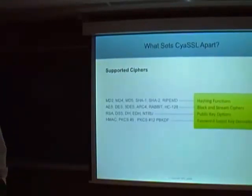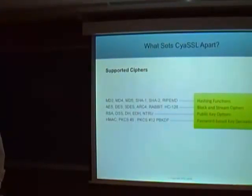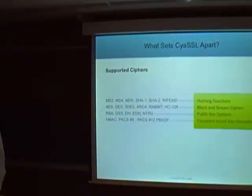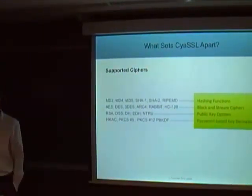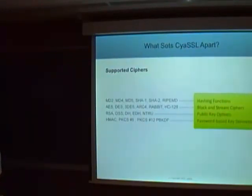This is a list of ciphers that CYASL supports — pretty much all standard ciphers, including some stream ciphers: RC4, Rabbit, and HC128. The default stream cipher for SSL is RC4, which is good but getting a little old. So three years ago we introduced the Rabbit and HC128 stream ciphers from the eStream project. Rabbit is about twice as fast as RC4, and HC128 is about five times faster than RC4.